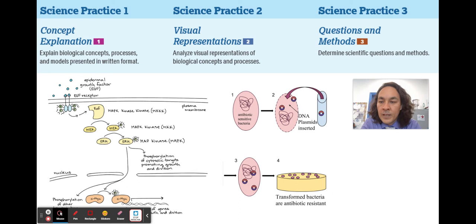The first skill is just being able to explain concepts using models and explaining them when written in or when presented in a written format. So looking at something like this signal transduction pathway here, where there's a growth factor and it's telling a cell divide, you should be able to explain that after that unit and then analyzing visual representations of logical concepts and processes. So trying to make sense of models and then also determining scientific questions and methods. So setting up experiments.